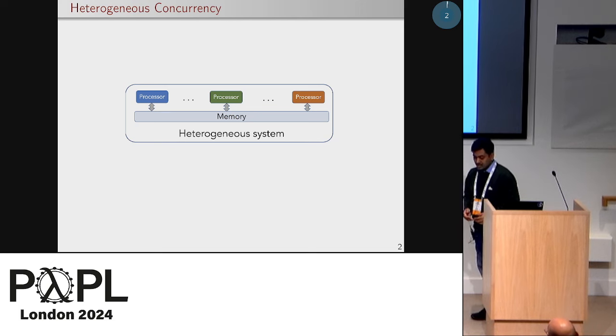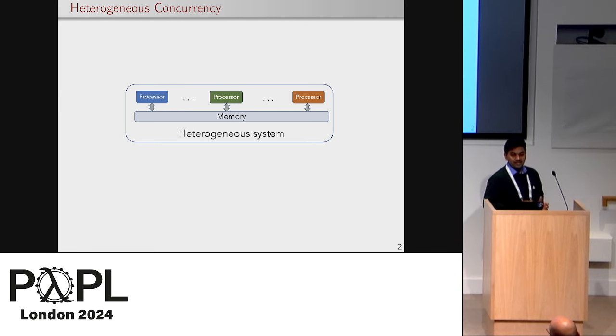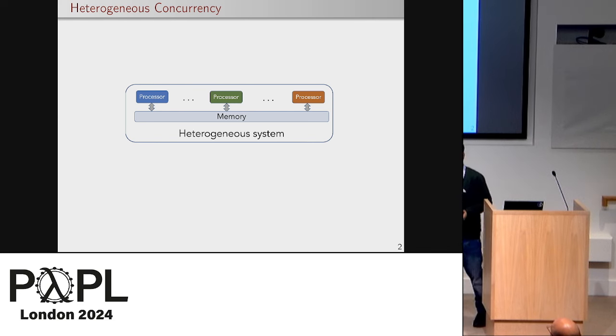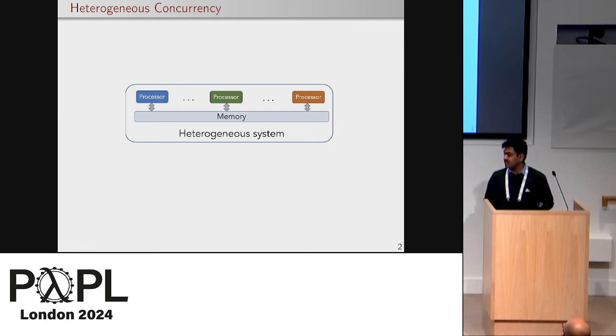Heterogeneous concurrency is a system where different types of processors are combined via shared memory. These systems are fast emerging because they give a promise of performance improvement and energy efficiency, and are appearing in various applications and all devices.